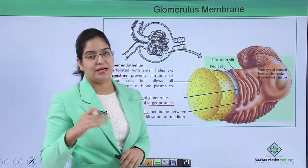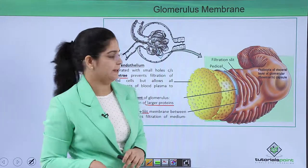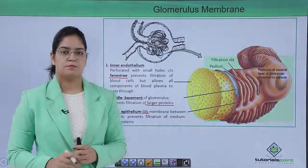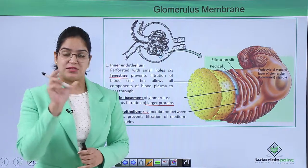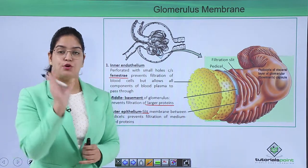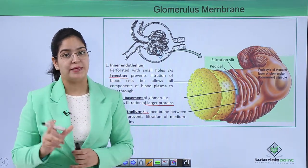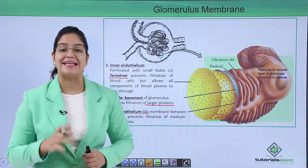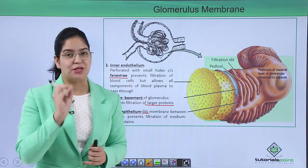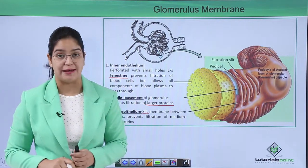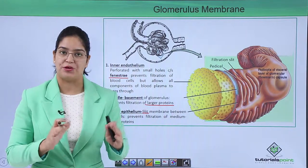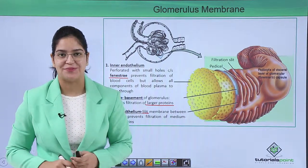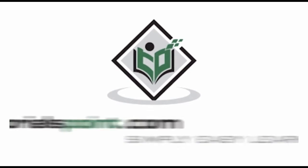In this video we have talked about the structure of the nephron, the glomerulus, and Bowman's capsule. In the next video we will talk about the tubular structure of the nephron. I hope you understood the concept of the glomerulus and Bowman's capsule. Thank you — TutorialsPoint, simply easy learning.